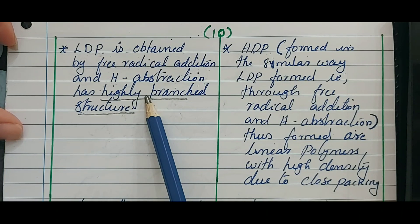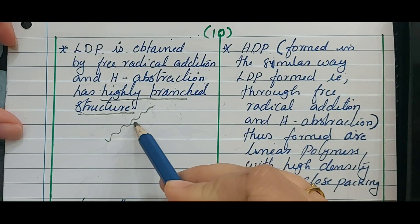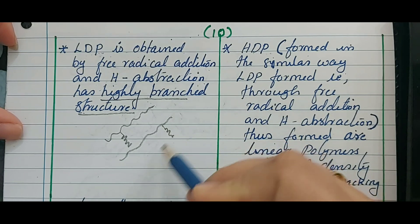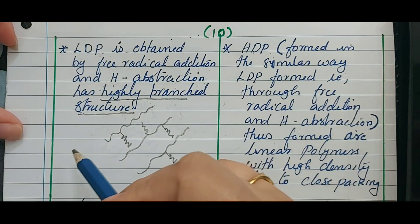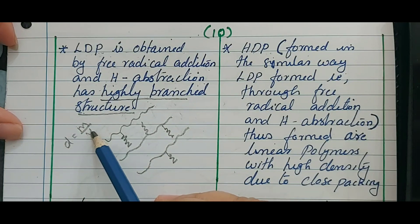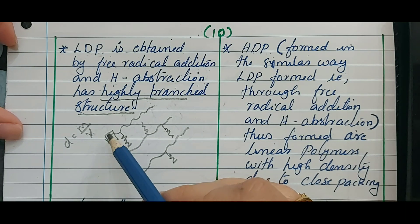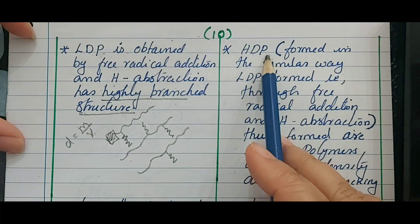Low density polythene is highly branched. I can show you a schematic: one linear chain, then a branch, the next linear chain, then a branch, and so on. Density equals mass divided by volume, so per unit volume the number of molecules present is very less because of the branching — there are lots of gaps between the linear chains.